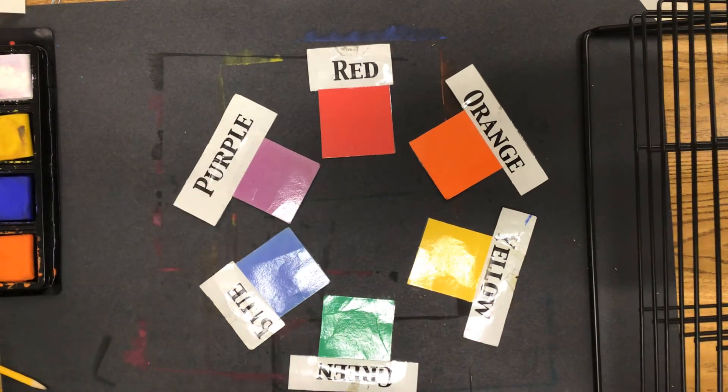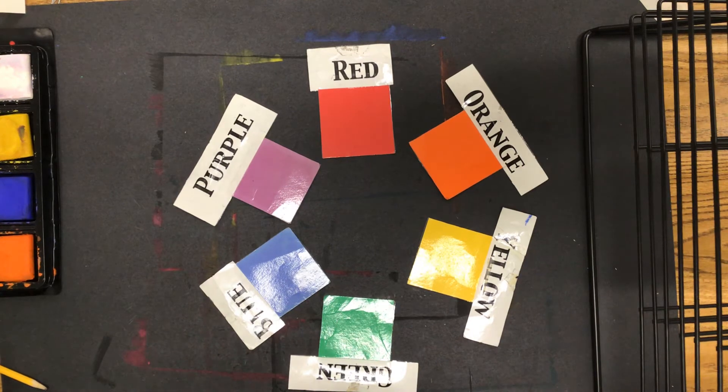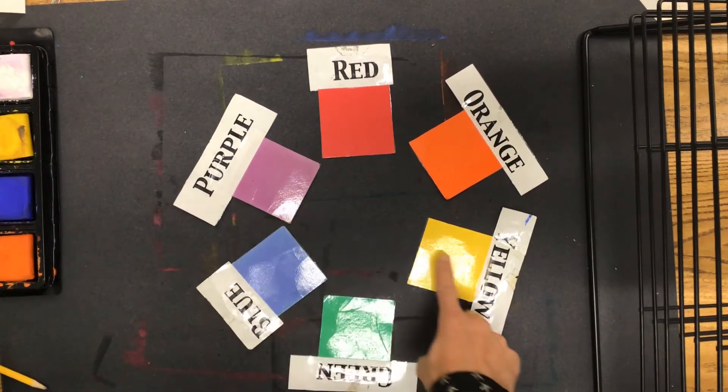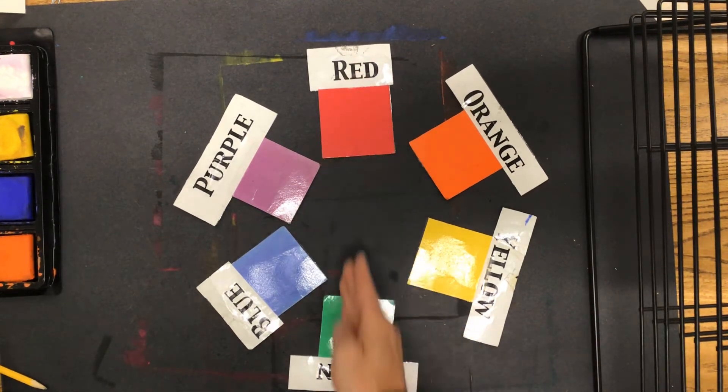And if you notice, the complementary colors are directly across from each other. Orange is the complement of blue. Purple is the complement of yellow. Red is the complement of green.